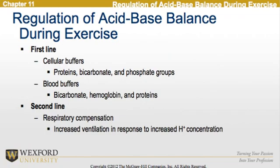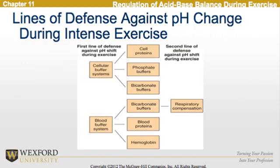The regulation of acid-base balance during exercise has a first line of defense — cellular buffers such as proteins, bicarbonate, and phosphate groups, and blood buffers including bicarbonate, hemoglobin, and proteins. There is also a second line of defense, which is respiratory compensation, where increased ventilation occurs in response to an increased hydrogen ion concentration. The chart below shows these lines of defense against pH change during intense exercise.